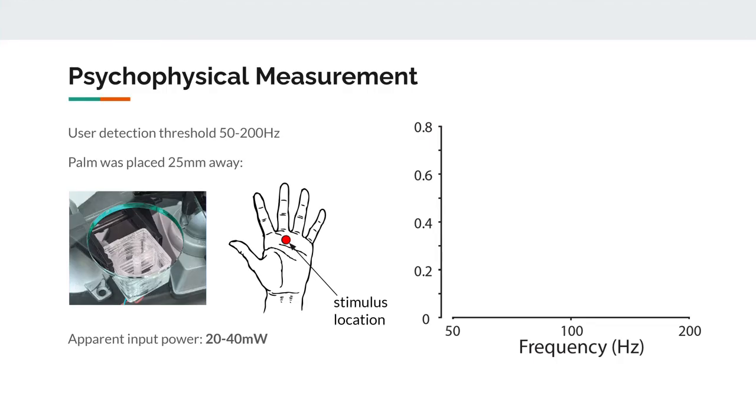Psychophysics. Finally, we quantified users' perception of the synthetic jet against their mid palm. Subjects placed their palm roughly 25 mm away from the jet output, and we conducted a detection threshold test to find the smallest stimulus that was still haptically detectable. Detection thresholds only slightly varied with frequency, and we found subjects could detect stimulus levels with as little as 20 to 40 mW of input applied power to the system.